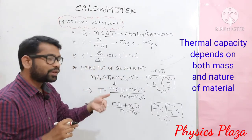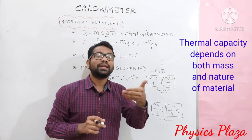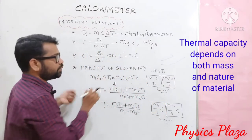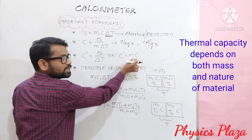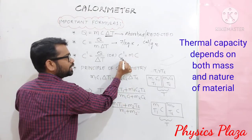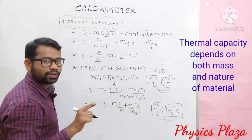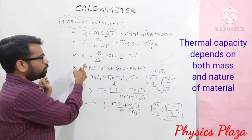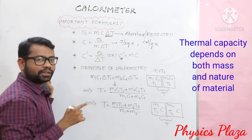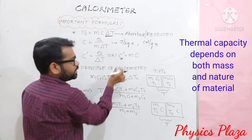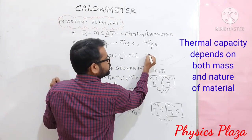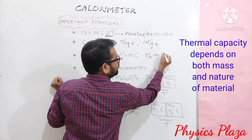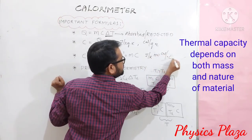Which formula to use depends on the data given. If mass and specific heat capacity are given, then use C-dash equal to m into c. If amount of heat and change in temperature are given, then use C-dash equal to Q by delta t. The SI units of thermal capacity are joule per Kelvin, and CGS units are calorie per degree Celsius.